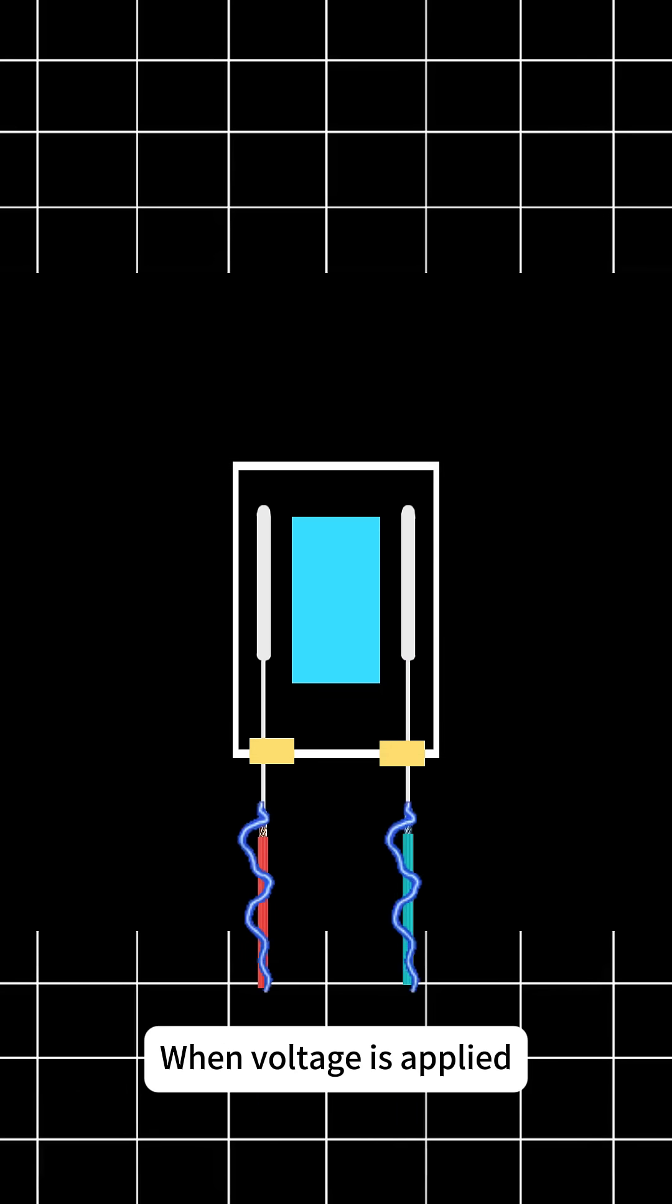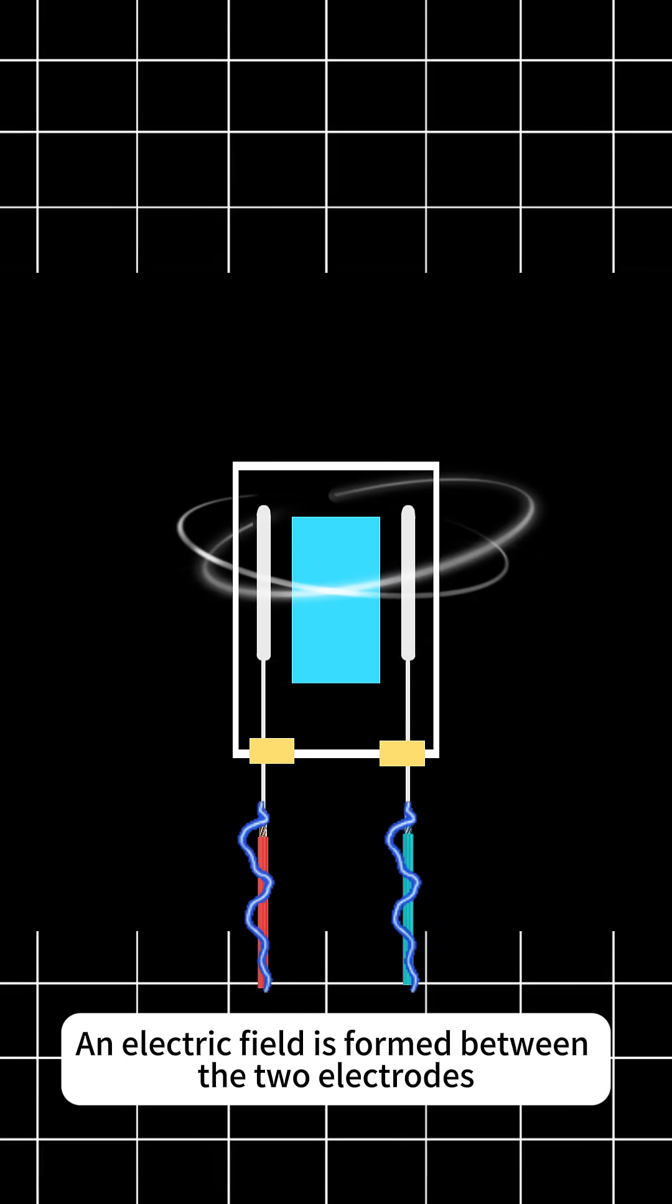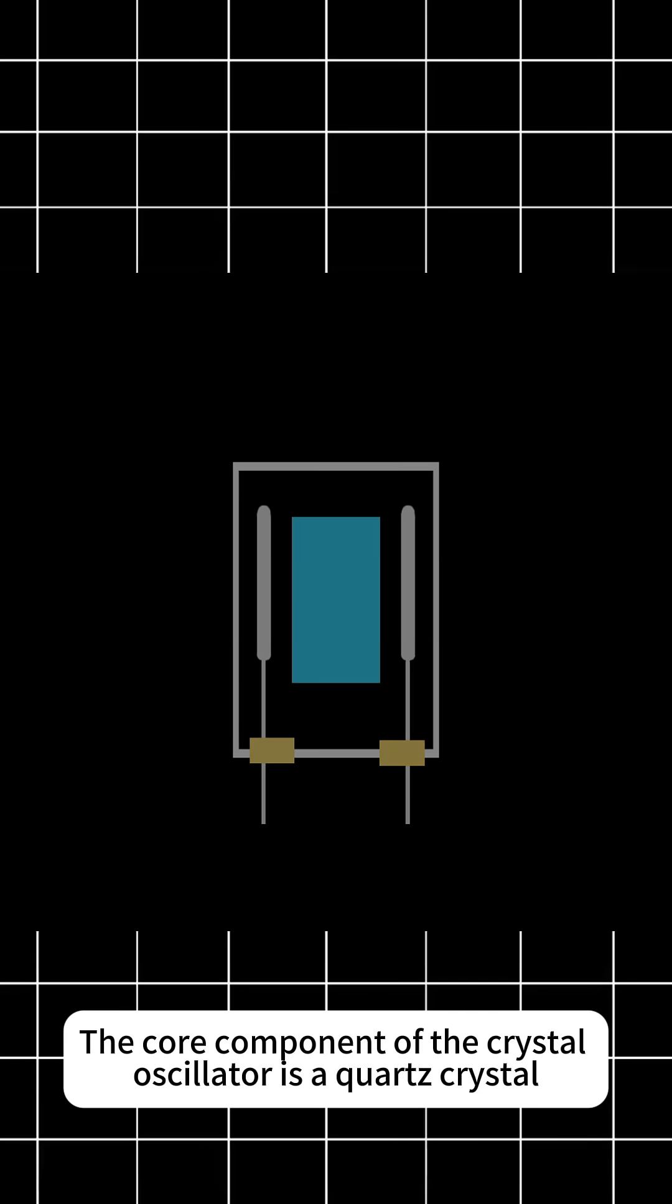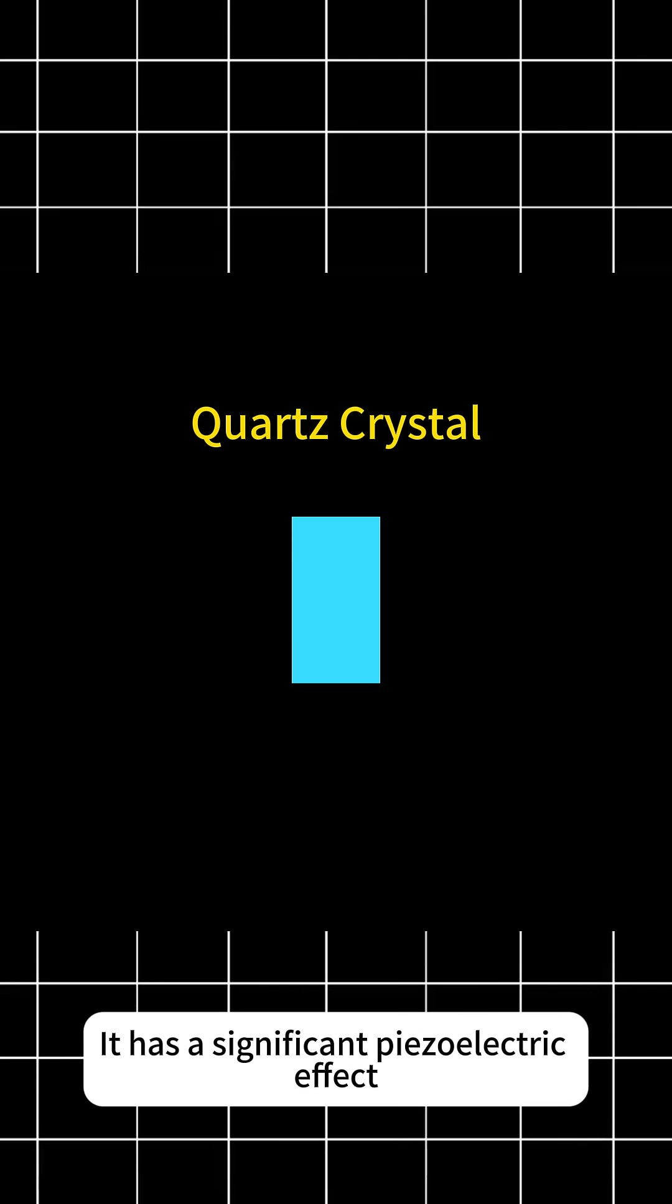When voltage is applied, an electric field is formed between the two electrodes. The core component of the crystal oscillator is a quartz crystal, which has a significant piezoelectric effect.